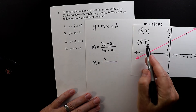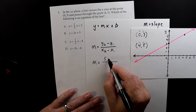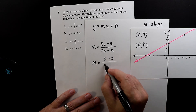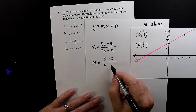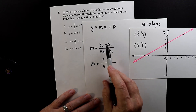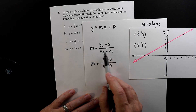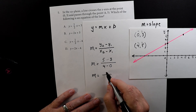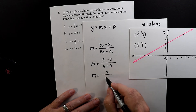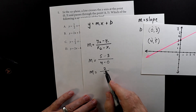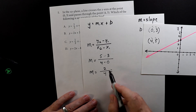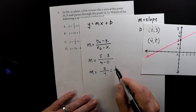Let's plug in these values. y2 is 5, y1 is 3, x2 is 4, x1 is 0. So y2 minus y1 over x2 minus x1 gives us 5 minus 3 over 4 minus 0. That simplifies to 2 over 4. Now this fraction can be simplified because 2 goes evenly into both numerator and denominator: 2 divided by 2 is 1, 4 divided by 2 is 2. So m equals 1 over 2.